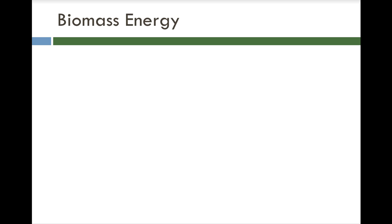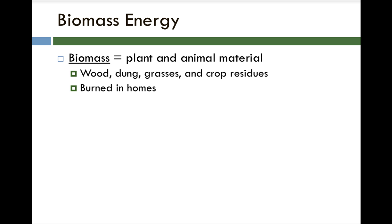Let's look at the three types of biomass energy. Biomass in general refers to anything that comes from something that was growing. When we talk about solid biomass, we're talking about plant and animal material, which includes wood, dung, grasses, and crop residues.